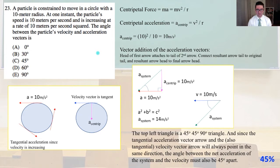The vector addition of acceleration vectors, we're going to do the head of the first arrow. It's going to attach to the tail of the second arrow. Connect the resultant arrow tail to the original tail and resultant arrow head to the final arrow head. And so that is going to be diagrammed down here in this beautiful diagram. And there's also another diagram provided over here for the beginning of the problem. The top left triangle is a 45-45-90 degree triangle, this one right here. And since the tangential acceleration vector arrow and also the tangential velocity vector arrow will always point in the same direction, the angle between the net acceleration of the system and the velocity must also be 45 degrees apart.